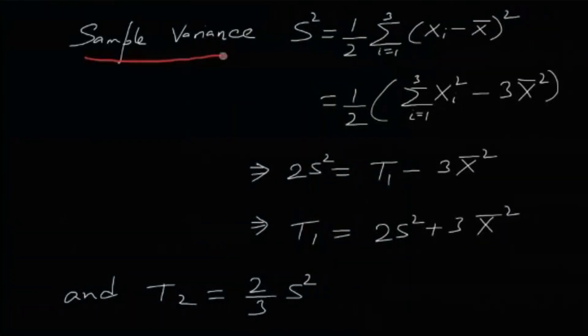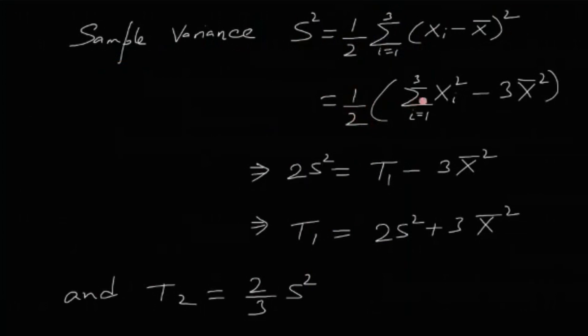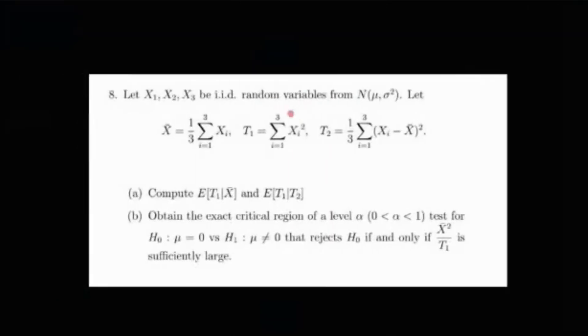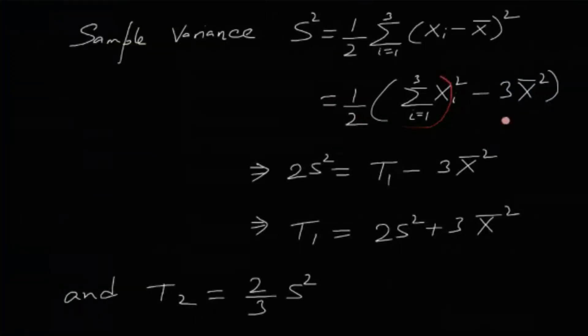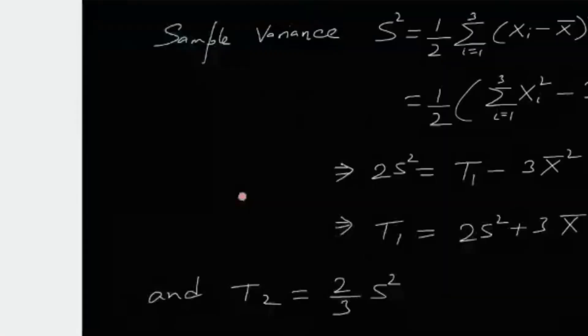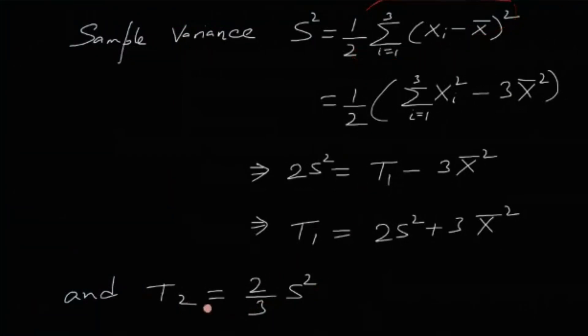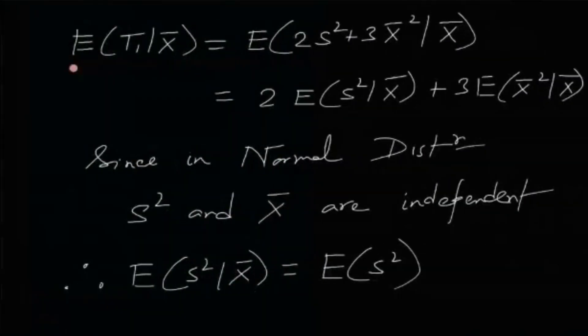The sample variance S² = (1/2)Σ(xi - x̄)² for i=1 to 3, which equals (1/2)(Σxi² - 3x̄²). This means 2S² = t1 - 3x̄², so t1 = 2S² + 3x̄². And t2 = (1/3)Σ(xi - x̄)² = (2/3)S², since t2 = one-third of twice S².